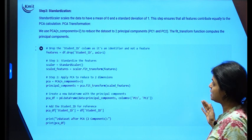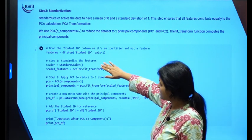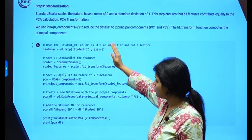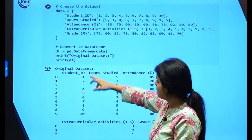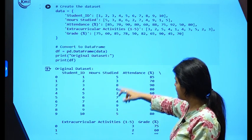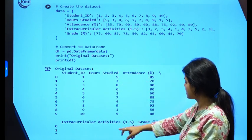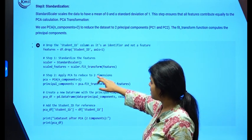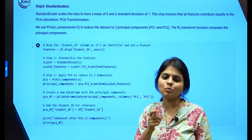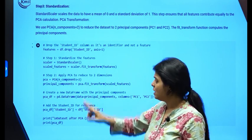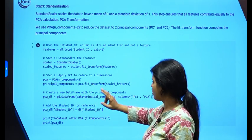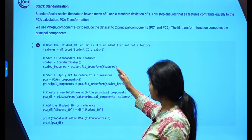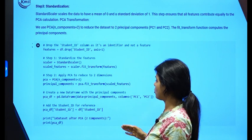Once standardization is done, I drop the student ID as it is not of much importance. I want to consider hours studied, attendance, extracurricular activities, and grade. I standardize the features and apply PCA to two dimensions — choosing two principal components — and fit that to the scaled features.